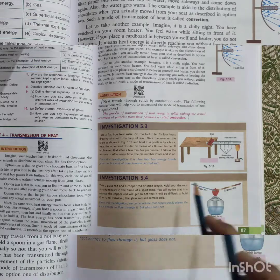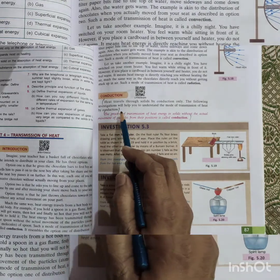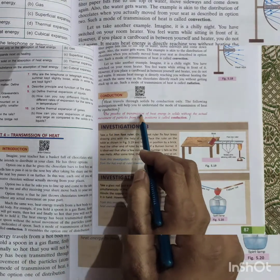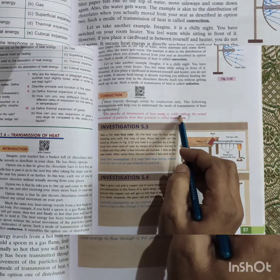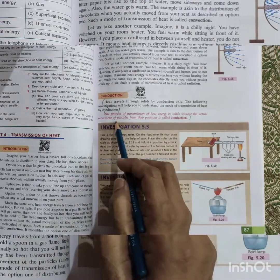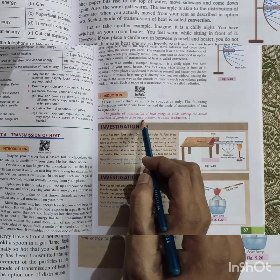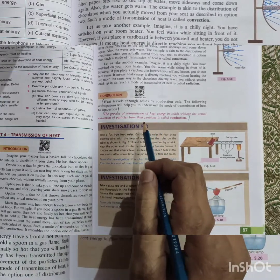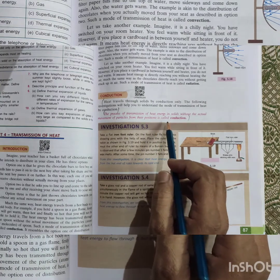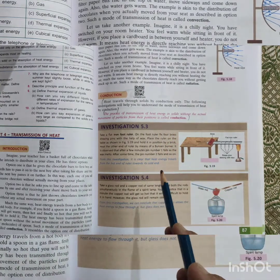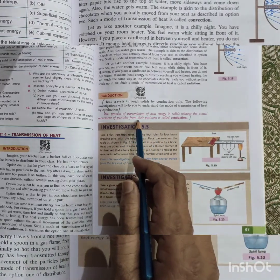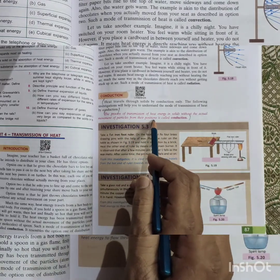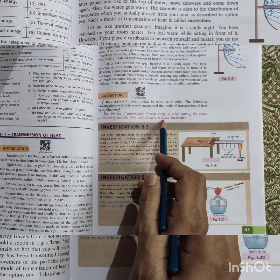Here you can see, what is conduction? Conduction is the process of transmission of heat energy in solids without the actual movement of the particles from their position. The transmission of heat energy in solid, only in solid, without the actual movement of the particles from their position. How does it happen?